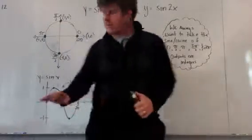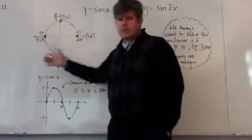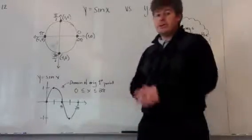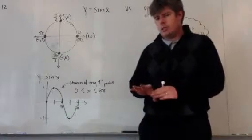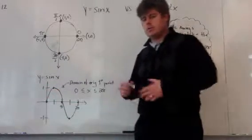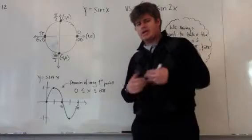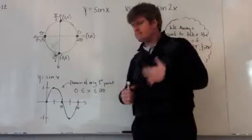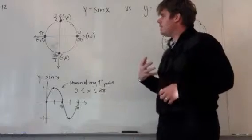Looking at the sine function, the domain of the original first period relates to how long it takes to go around a circle. Any circle — going all the way around — has an angle relationship of 2π, which is 360 degrees. We're plotting that against the output it creates. The input here is an angle, so the x-axis represents angles.